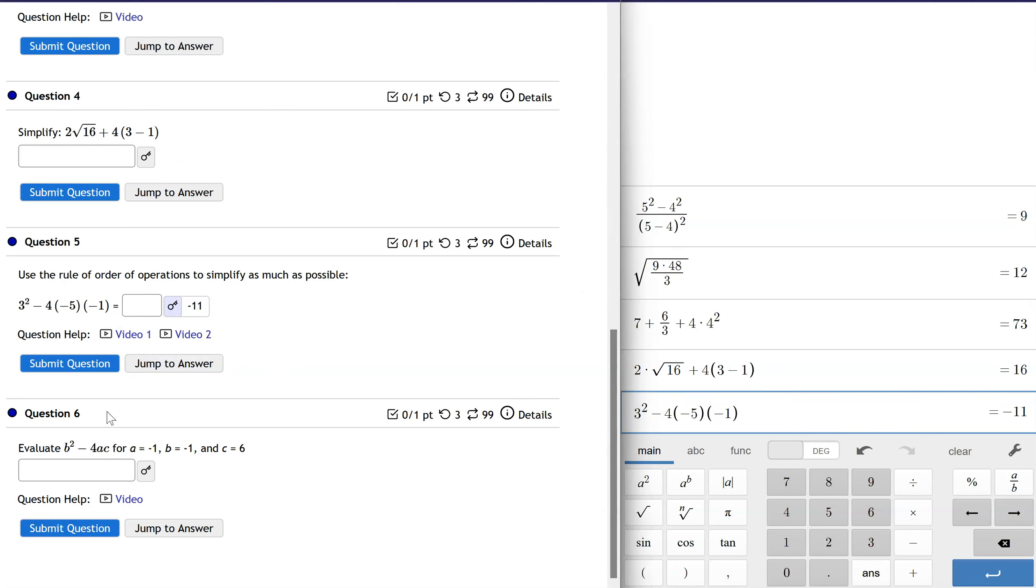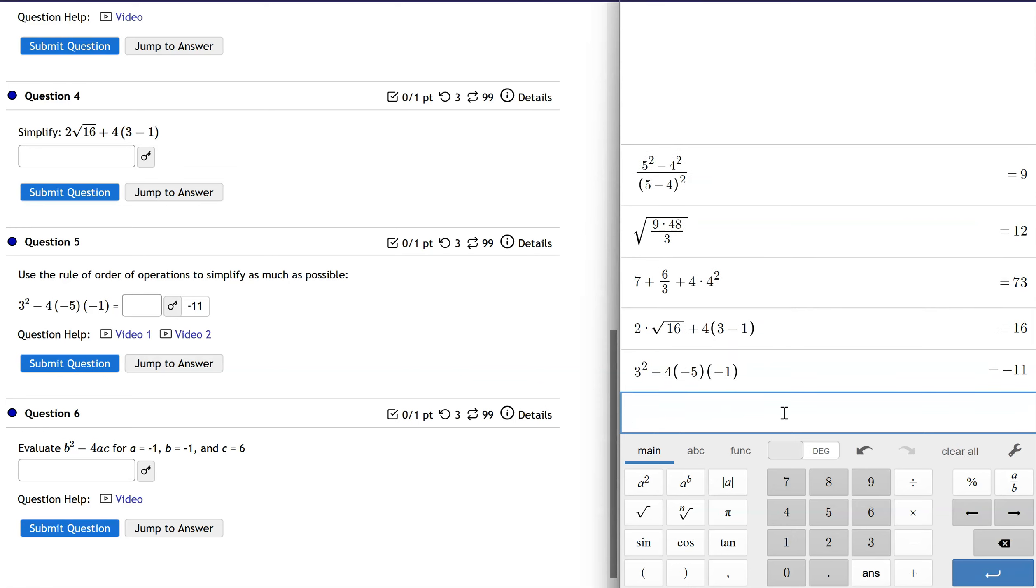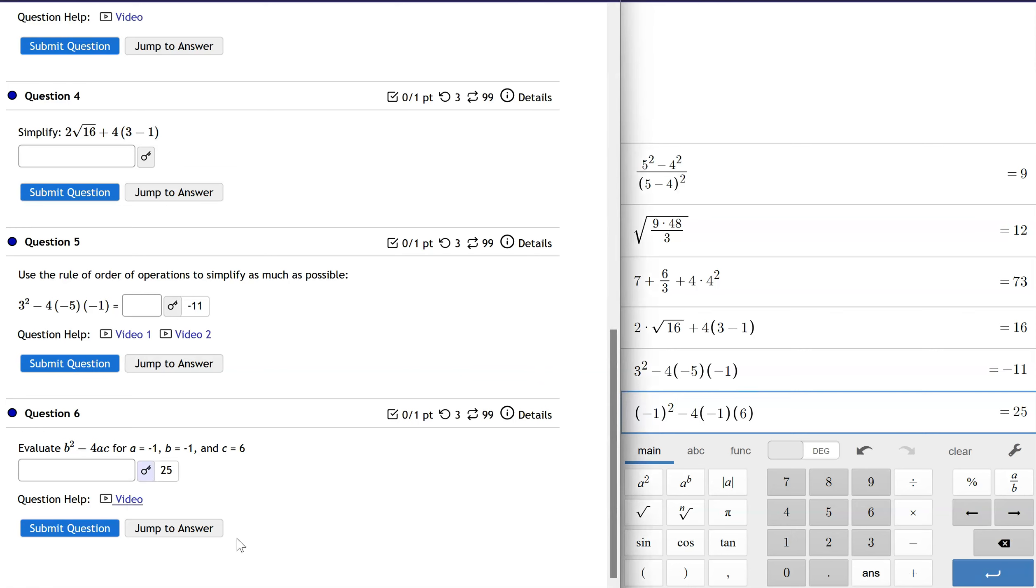Then the last one I wanted to show here is a substitution scenario. So when we're substituting, I really want to emphasize the importance of parentheses when substituting. So I'm going to have b squared, but what I'm going to do is for b, I'm going to have parentheses to the left and right of that number for b. So b is a negative 1. So there's b squared. So I want to make sure those parentheses are there, otherwise it's going to calculate it incorrectly. I'm going to go minus 4, and then I'm going to have parentheses around a, which is also negative 1, and then parentheses around c, which is positive 6. And then we get a 25 out, and we're all good there.